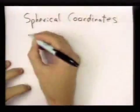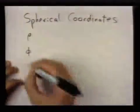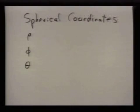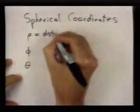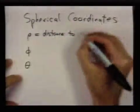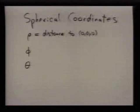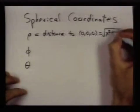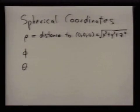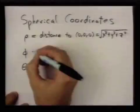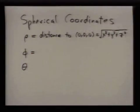There are three spherical coordinates: rho, phi, and theta. The idea is that any point in three dimensions can be described with these three numbers. Rho represents the distance to the origin, which in usual XYZ coordinates is the square root of x squared plus y squared plus z squared.